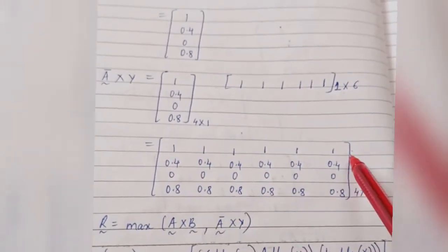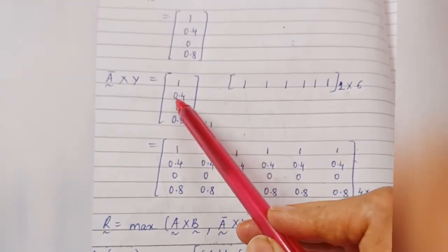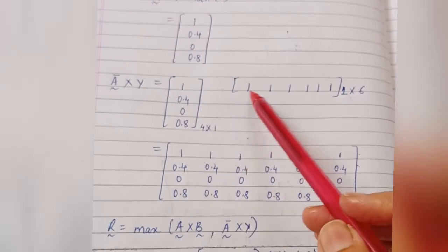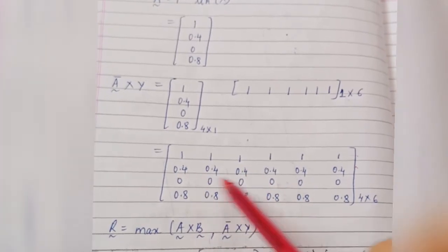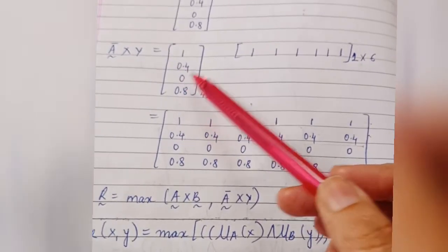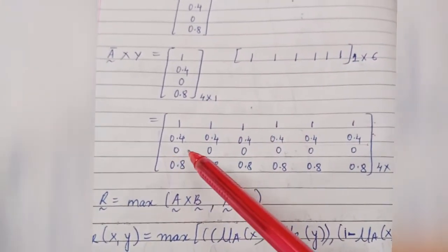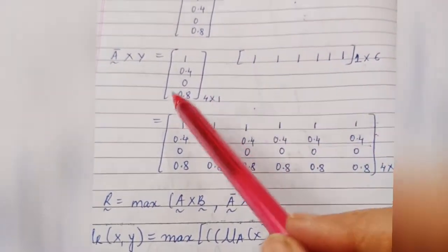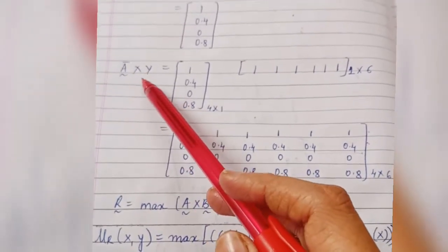Continuing A-complement Cartesian Y: third row uses element 0, so min(0, each) = 0 for all positions. Fourth row uses element 0.8: min(0.8, 1) = 0.8 for all positions. So the final 4×6 matrix of A-complement Cartesian Y is: row 1 = [1,1,1,1,1,1], row 2 = [0.4,0.4,0.4,0.4,0.4,0.4], row 3 = [0,0,0,0,0,0], row 4 = [0.8,0.8,0.8,0.8,0.8,0.8].